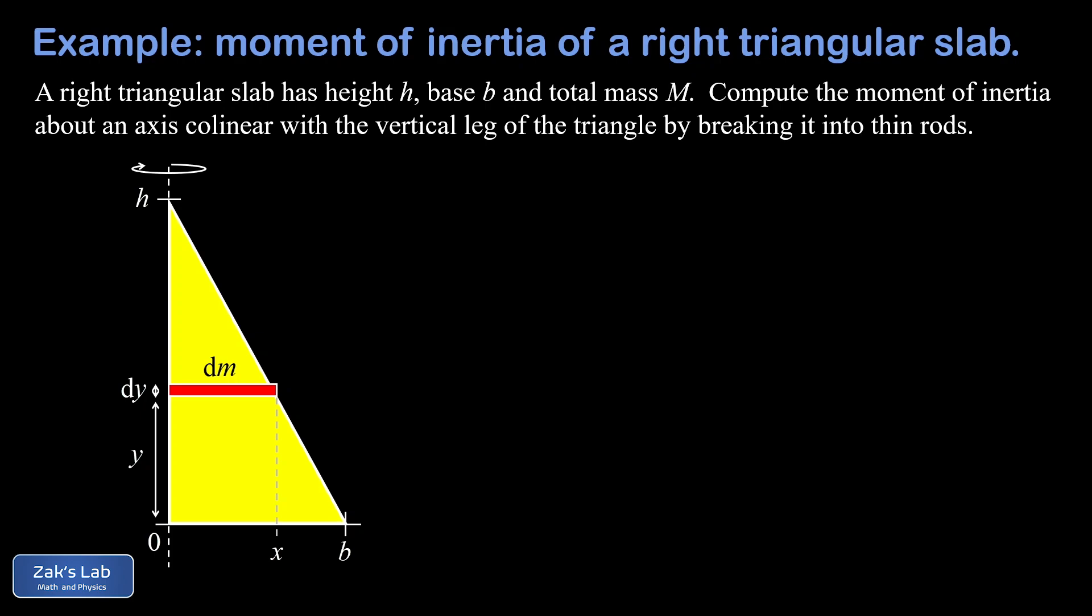The vertical slice version I'll do in another video. There's a representative thin rod and we give that an infinitesimal mass of dm. We locate it at a variable vertical position of y and it has a thickness of dy.